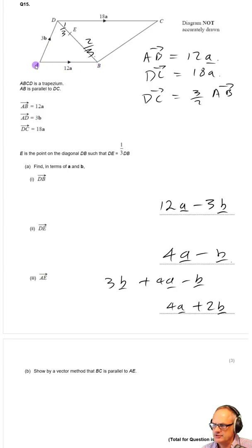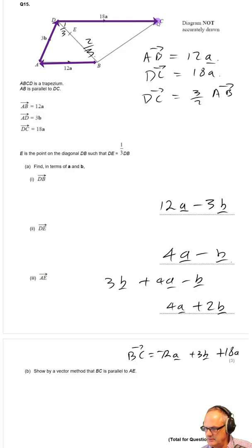We can use minus 12a plus 3b plus 18a. So BC equals minus 12 lots of a plus 3b plus 18a. Minus 12a plus 18a is just going to get us 6a plus 3b.